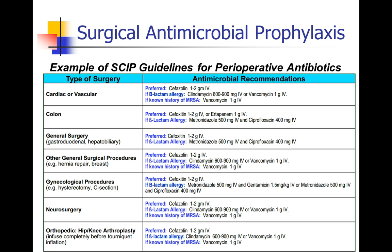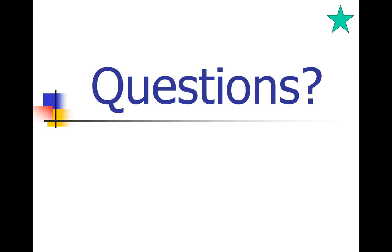This table is only an example of SCIP guidelines — the guidelines change, so check with your institution to get current recommendations. But on a SCIP table, you can look up the kind of surgery you're doing — say, a C-section — and find out what the preferred drug is. Here it's cefoxitin, and what some alternatives would be if the patient has an allergy to cefoxitin. That's the end of this recording, and we will continue with the discussion of antibiotics in the next section.